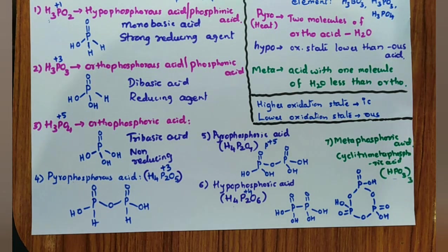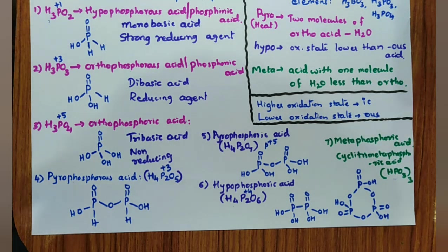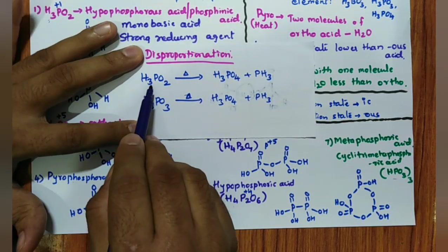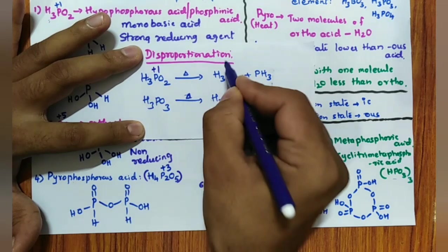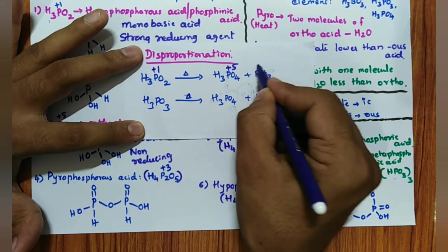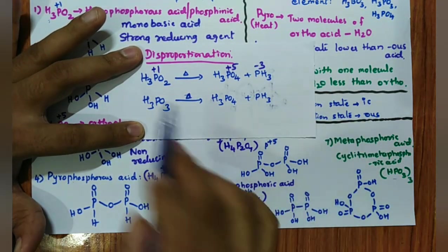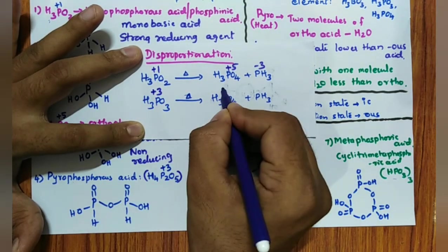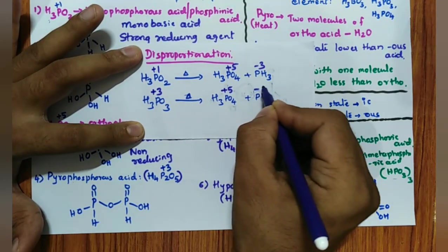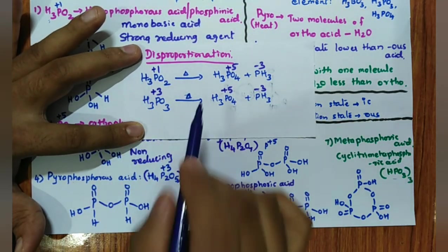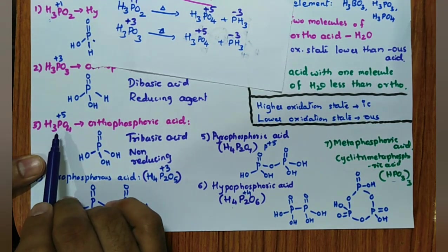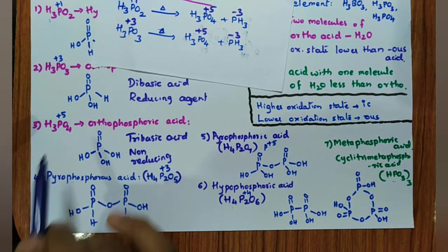Disproportionation reactions: H₃PO₂ (+1) undergoes disproportionation to give +5 and −3 products. H₃PO₃ (+3) undergoes disproportionation to give +5 and −3 products. Orthophosphoric acid cannot undergo disproportionation because +5 is the highest oxidation state for phosphorus and further oxidation is not possible.